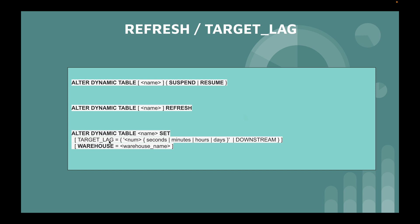The TARGET_LAG parameter is set when you create a dynamic table and can be specified as a number followed by SECOND, MINUTE, HOUR, or DAY. Another value you can use is DOWNSTREAM, which means the table will be refreshed manually — when you refresh a downstream table, it also refreshes any upstream tables in the dependency graph. So dynamic tables can be refreshed automatically by time or triggered via the DOWNSTREAM keyword.